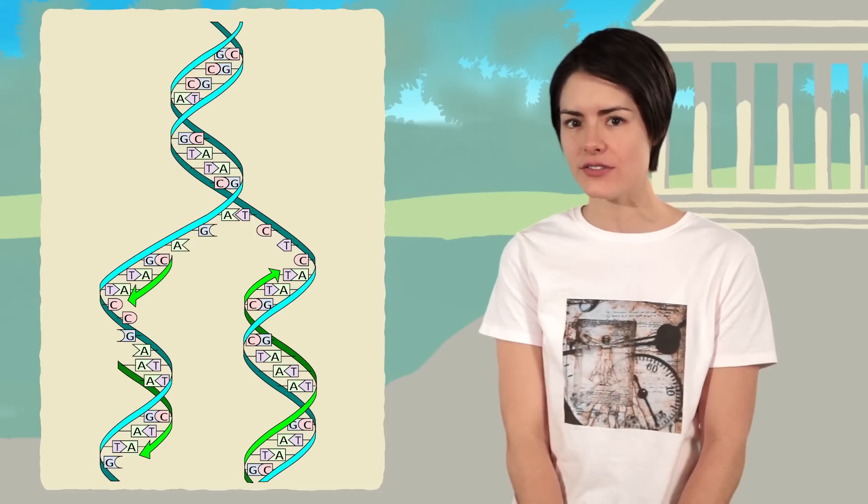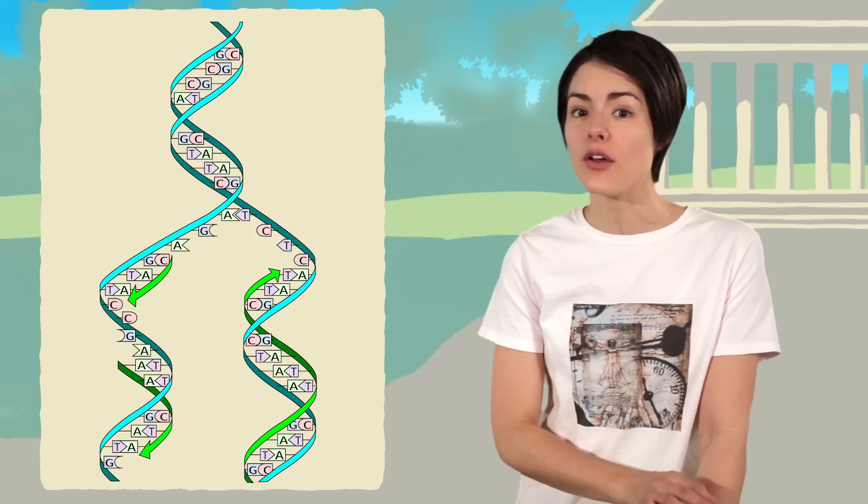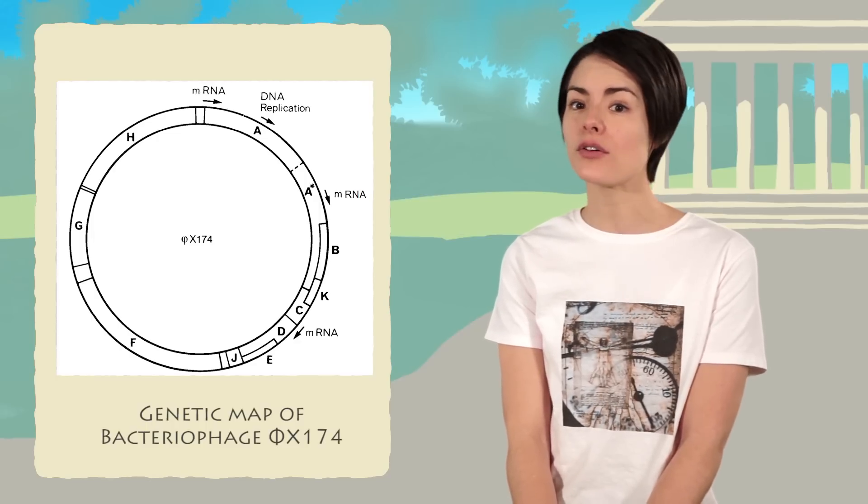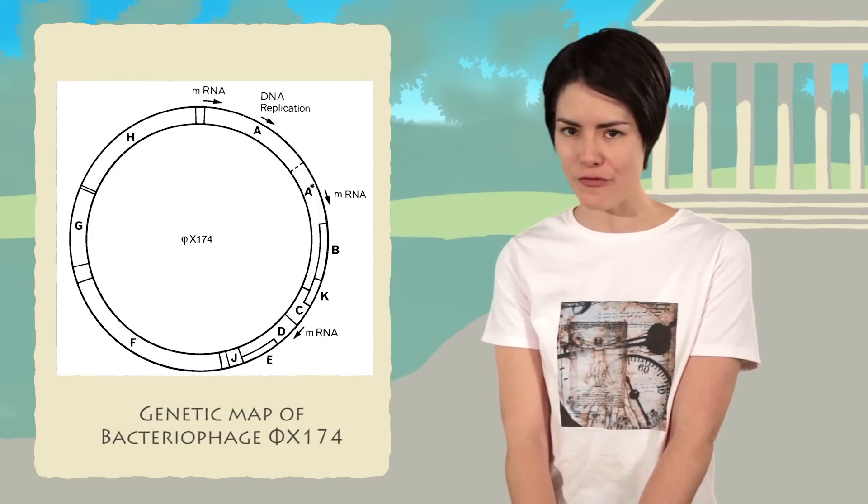Sanger's lab then turned to the holy grail of molecular biology, to sequence DNA. Sanger mimicked the replication of DNA using DNA polymerase and radioactively labeled nucleotides. Using this method, Sanger and his group sequenced the first complete genome in 1977, that of bacteriophage PHYX174.